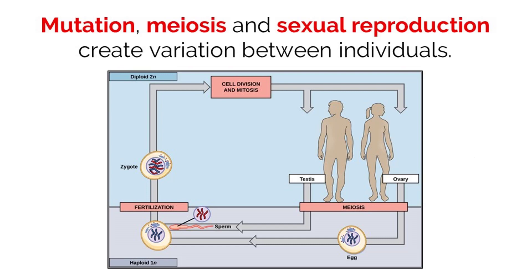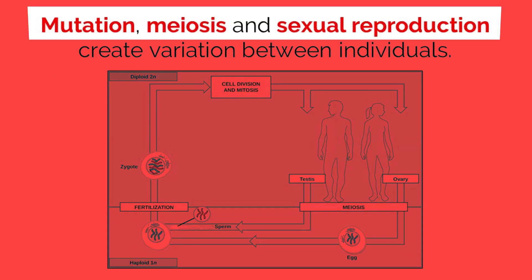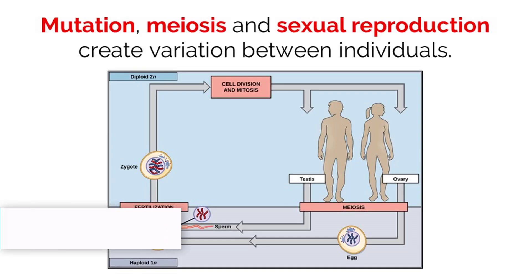As stated earlier, in order for evolution to take place, there has to be variation in a population. For organisms that sexually reproduce, there are three different mechanisms that can create genetic variation for natural selection to work. The three methods are mutation, meiosis, and sexual reproduction.